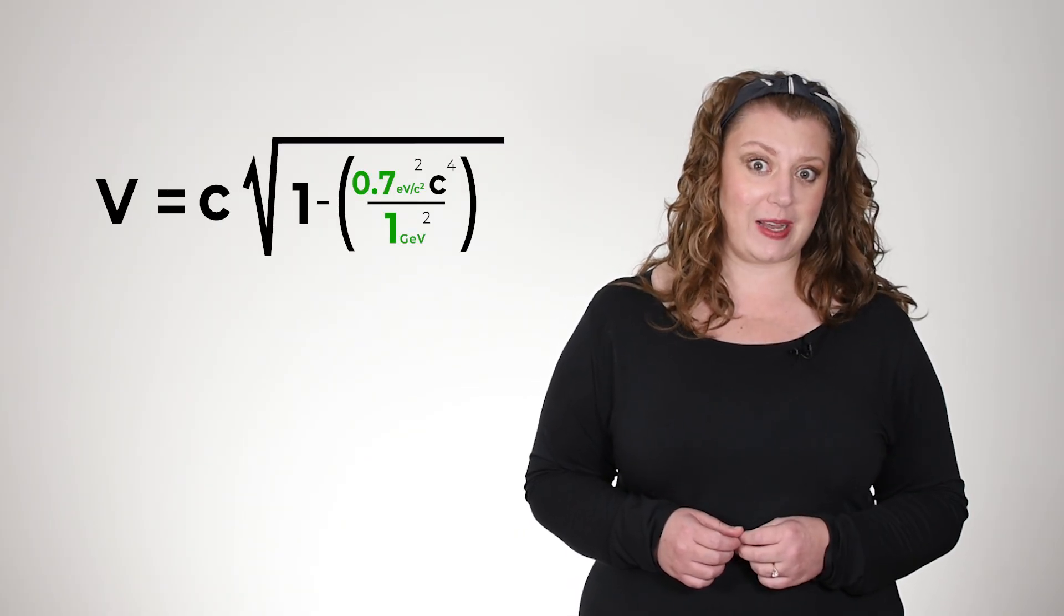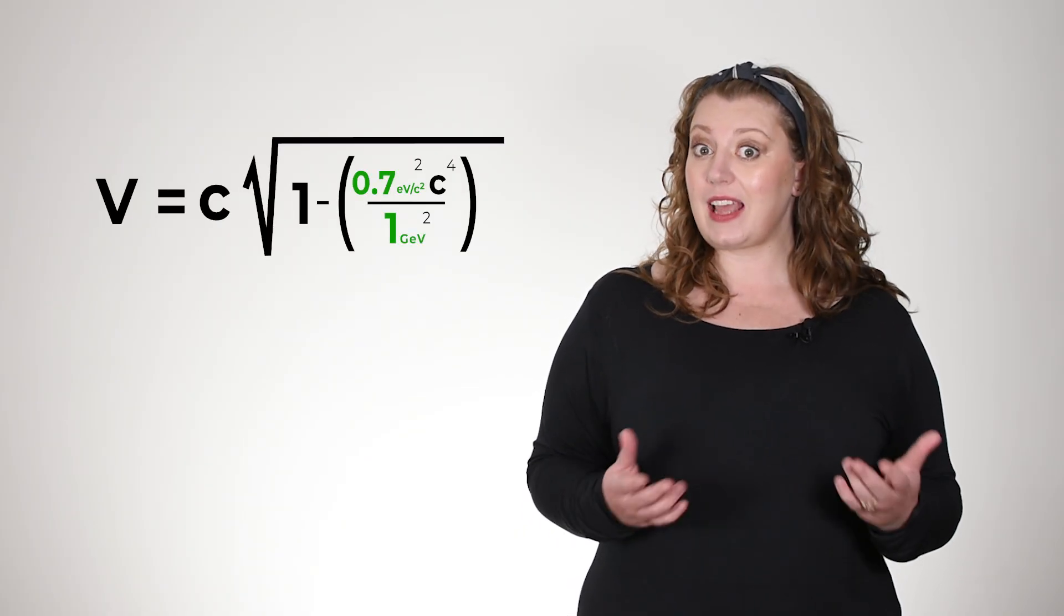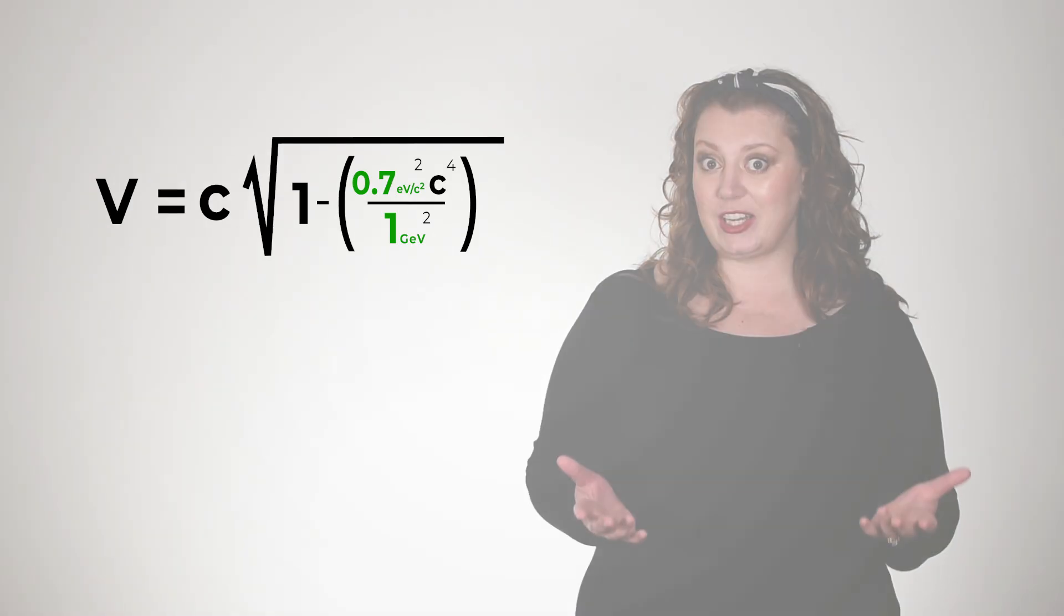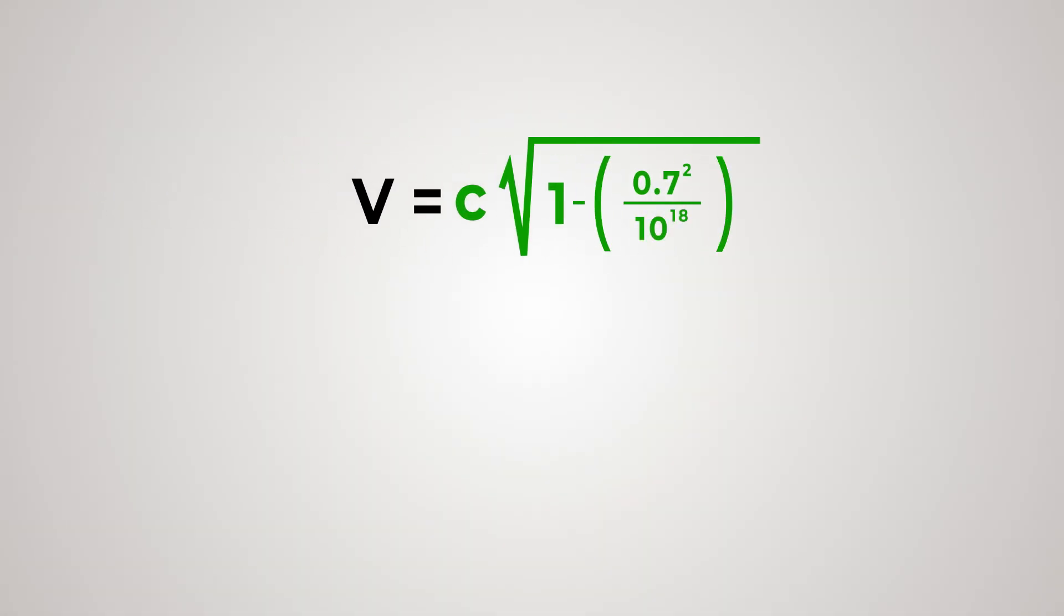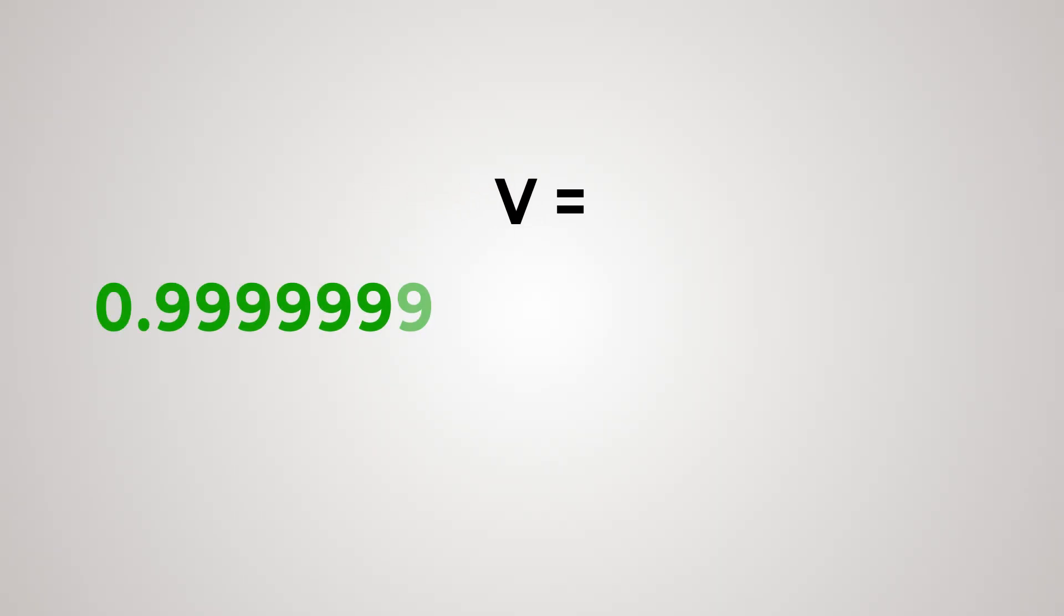KATRIN recently showed that the mass of the neutrino has to be less than 0.8 eV over c squared. So let's say KATRIN is just shy of finding the neutrino mass. We'll plug in 0.7 eV over c squared into our equation. That tells us that our neutrinos would travel at 0.99999999999999995 times the speed of light.